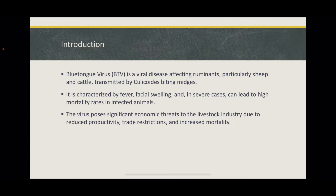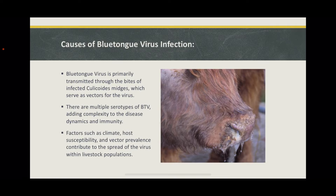BTV is primarily transmitted through the bites of infected Culicoides midges, which act as biological vectors. The virus undergoes replication within the midge's body, and when the insect feeds on a susceptible host, it transmits the virus through its saliva. BTV is classified into multiple serotypes, each representing a distinct variant of the virus. Different serotypes may exhibit variations in virulence, geographic distribution, and host susceptibility.